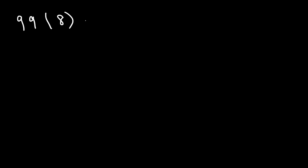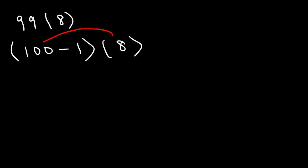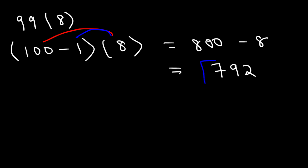What about 99 times 8? You can do it the old-fashioned way, or use the distributive property. 99 is equivalent to 100 minus 1, so multiply that by 8. Distribute 8 to 100 and negative 1: 100 times 8 is 800, and 8 times negative 1 is negative 8. So we take 800 minus 8, which gives us 792.